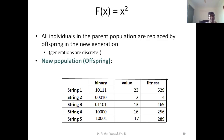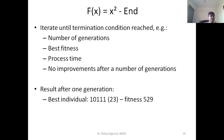Convergence can be decided in different ways: we can fix the number of generations, track the best fitness obtained so far, or — most commonly — stop when we see no improvement after a number of generations. For example, taking the end of step one as the convergence state, the fittest chromosome obtained has a value of 529.